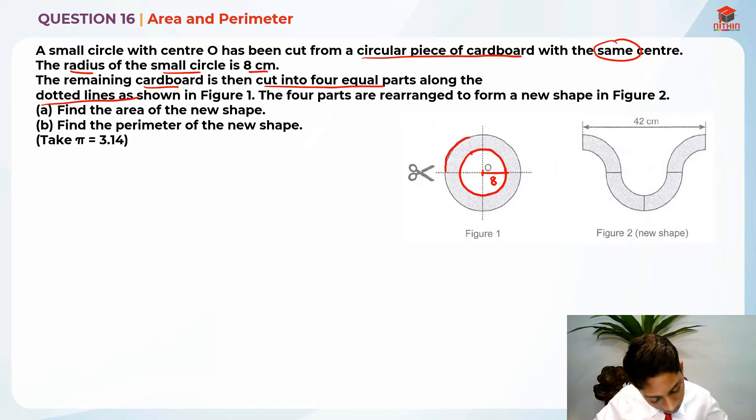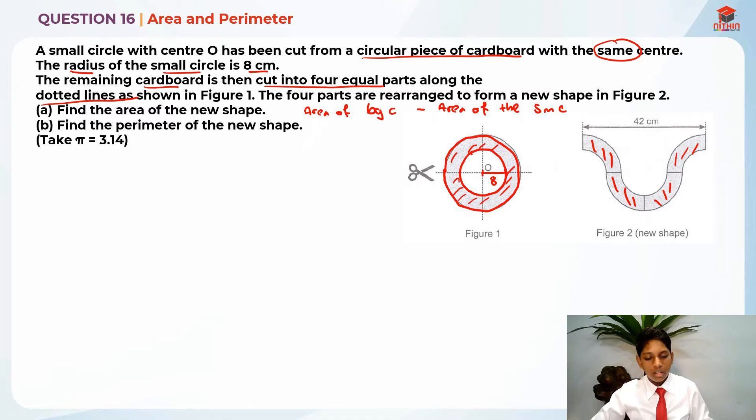In order to do that, you can actually do this which is way more simpler. So basically, what you need to do is to take the area of the big circle minus the area of the small circle. Why am I telling that is because we are finding the cardboard area, right? So the cardboard area is basically the area of the big circle minus the area of the small circle, which actually makes sense.